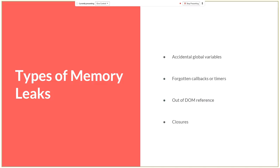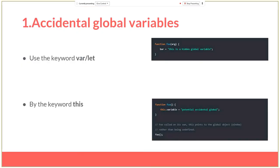The fourth type is closures. In my opinion it's the rarest case where we can encounter a memory leak, because the garbage collector successfully collects memory from closures. It's a very rare case. So let's see some details on the four types, starting with accidental global variables.